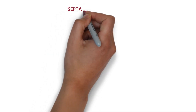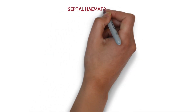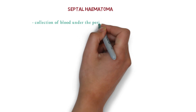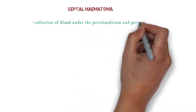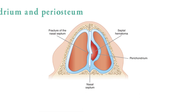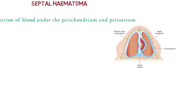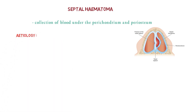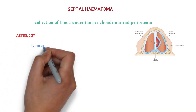Today we are going to learn about septal hematoma. Septal hematoma is a collection of blood under the perichondrium and periosteum. Here we can see the perichondrium, and under this there is a collection of blood — this is called a septal hematoma.